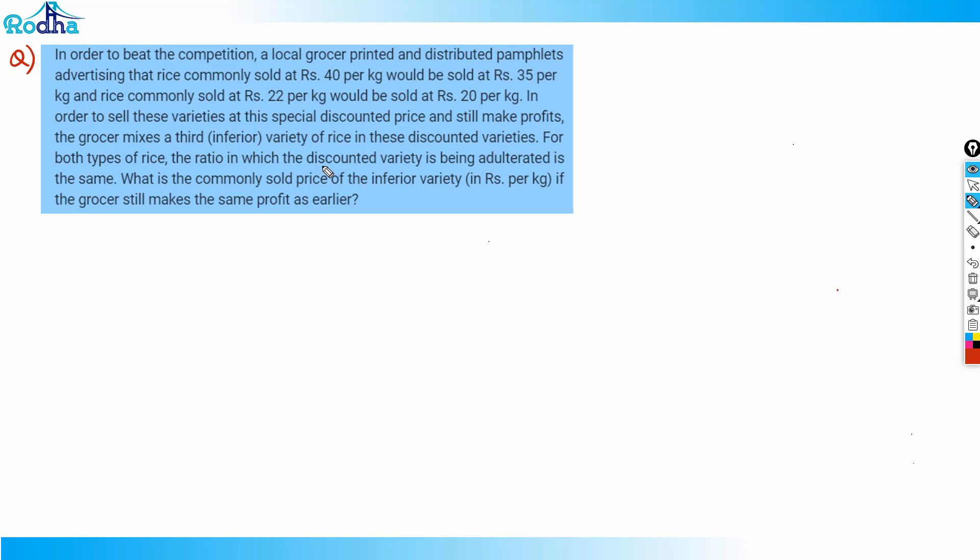For both types of rice, the ratio in which the discounted variety is being adulterated is the same. That's the key attacking point. What is the commonly sold price of the inferior variety if the grocer still makes the same profit as earlier?